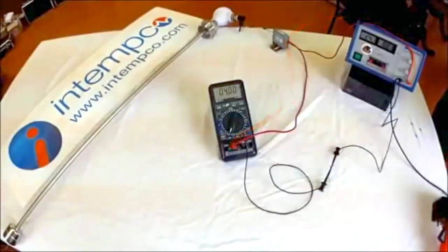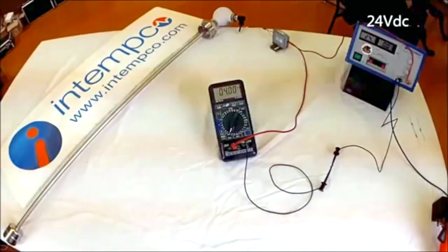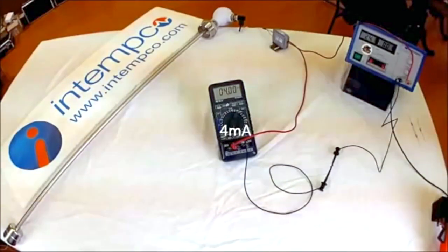We are starting with the power supply set to 24 volts and the sensor all the way at the bottom. As you can see, the current indicated is 4 milliamps. This indicates the float is at the bottom of the sensor span.